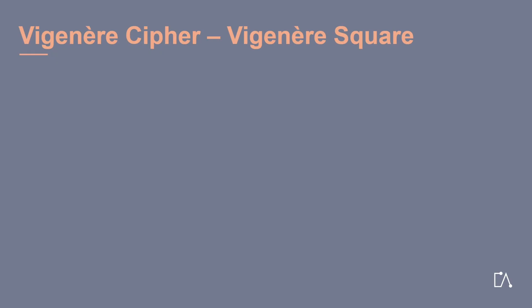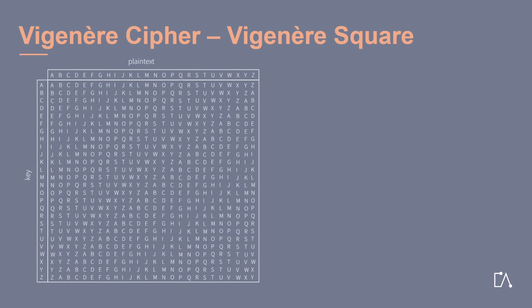The Vigenère cipher becomes much easier to use with the so-called Vigenère square. Starting with the original alphabet, all shifts of this alphabet are written down — first no shift, then a shift by one space, then two, and so on. In total, we obtain a twenty-six by twenty-six table. On the left side we have an alphabet for the letters of the key, and on the top for the letters of the plaintext.